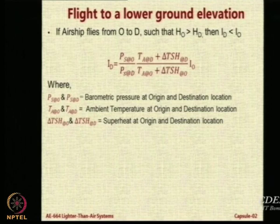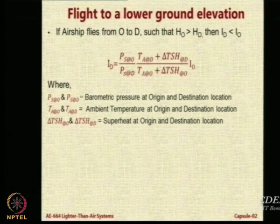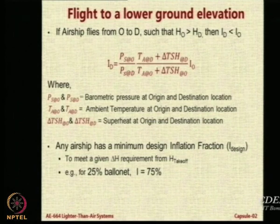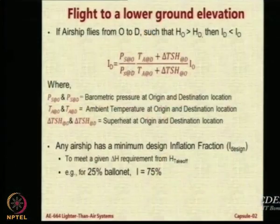Now, please note these are the barometric pressure heights at the origin and destination; T and T are the ambient temperatures and the superheat. You have a minimum inflation fraction already designed in the airship to take care of delta H, the altitude change. For example, if I design the airship to take off from Pune to a height of 2 kilometers from Pune, I will work out how much ballonet volume is needed as a percentage of total volume — that is 1 minus I — which may be 25 percent. So, one-fourth of the volume is ballonet, three-fourths is LTA gas at ground level. But the inflation fraction needed at the destination is more.